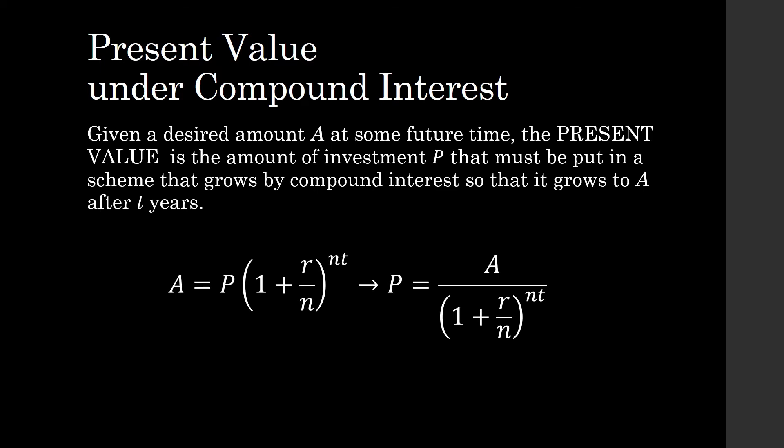And so that is basically getting the value of P from our value to compute for the accumulated value. P, this is our present value, P is equal to A all over 1 plus R over N raised to N times T. N is the frequency of compounding, R is the rate of interest, and T is the number of years.